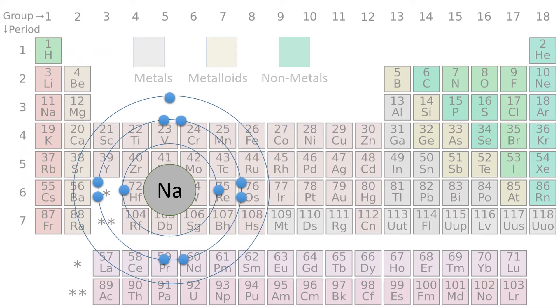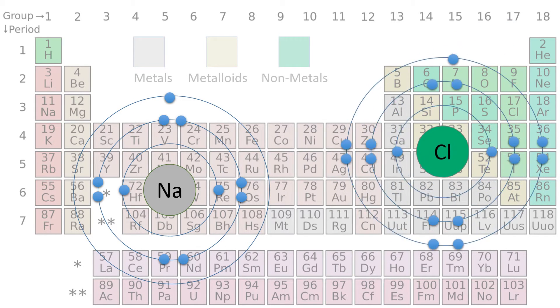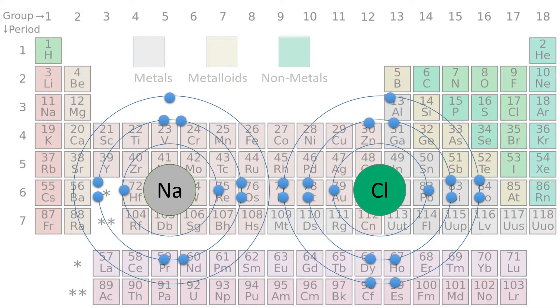Sodium is in group 1 and therefore has one electron in its outer shell. It can form a compound with a non-metal such as chlorine from group 7 with 7 electrons in its outer shell.